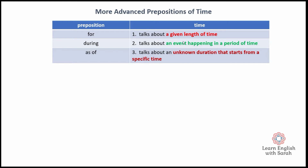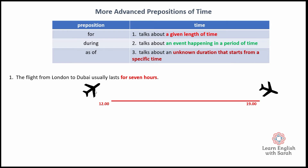Let's look at some examples. I used to live in China, and when I flew home and back I always used to go through Dubai airport. The flight from London to Dubai usually lasts for seven hours. So this is me leaving London at 12 o'clock and arriving in Dubai at 7 o'clock — 1900 hours. This is the given length of time: it has a clear start and a clear end.